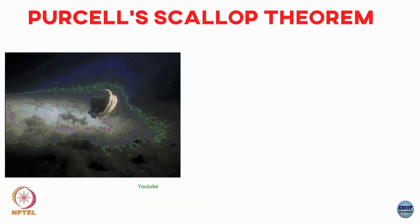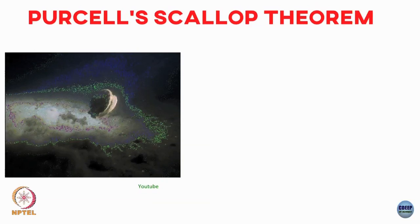That is how the scallop swims. What Purcell asked was: this is a very simple model of swimming — you have two plates with an angle between them, you change this angle as a function of time, you open it and close it, and as a result you get swimming. Would this strategy be a successful strategy for swimming if we are talking about microorganisms which live at low Reynolds numbers?